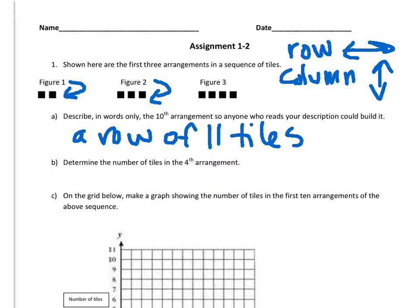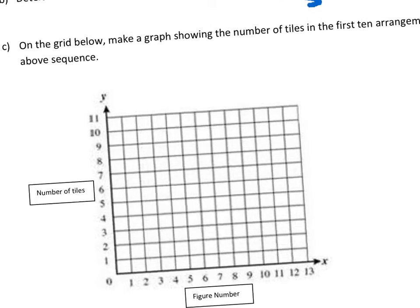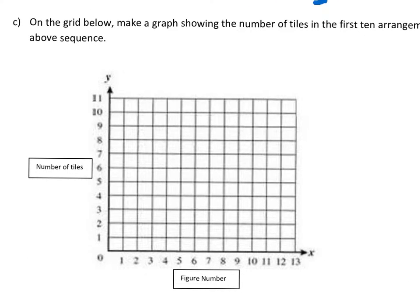And B, the number of tiles in the fourth arrangement would be five. So on the grid below, make a graph showing the number of tiles in the first ten arrangements. So here we have the number of tiles and the figure number. So figure number one had two tiles, and two had three, and three has four. And remember, it's one more than each. So we keep plotting these up. And we're going to make a line through them.